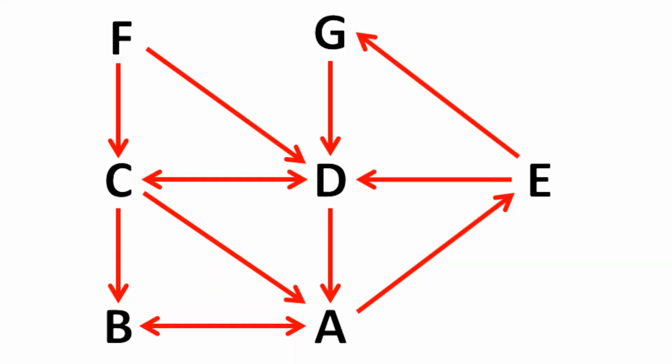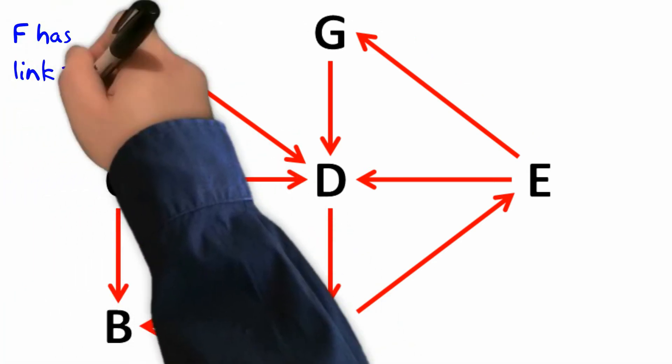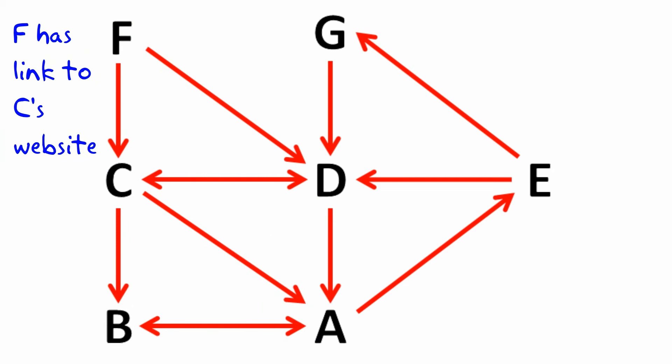So let's look at an example just using seven websites. I've drawn arrows to show links from one website to another. So for example, on the F website there is a link that takes you to the C website.